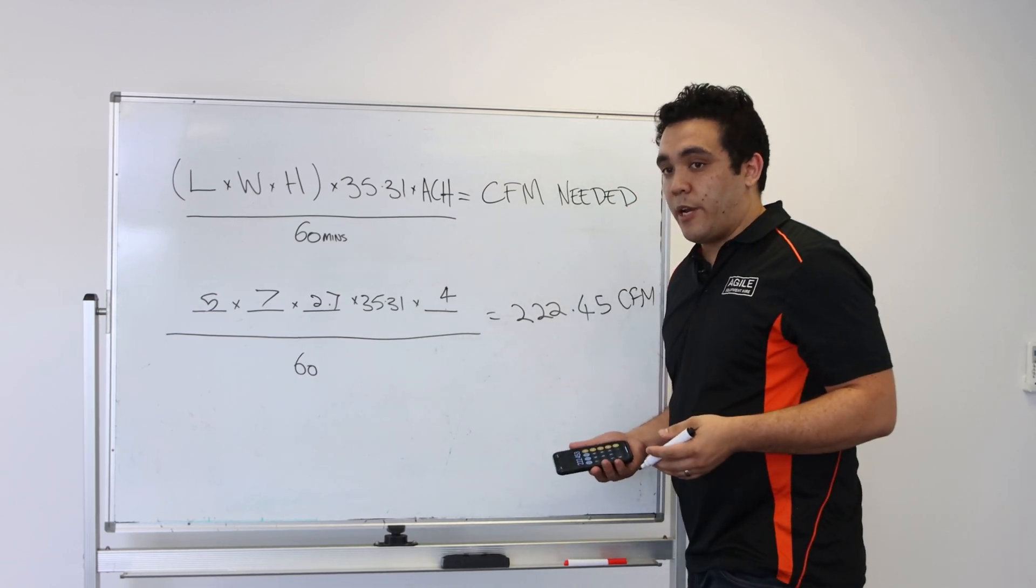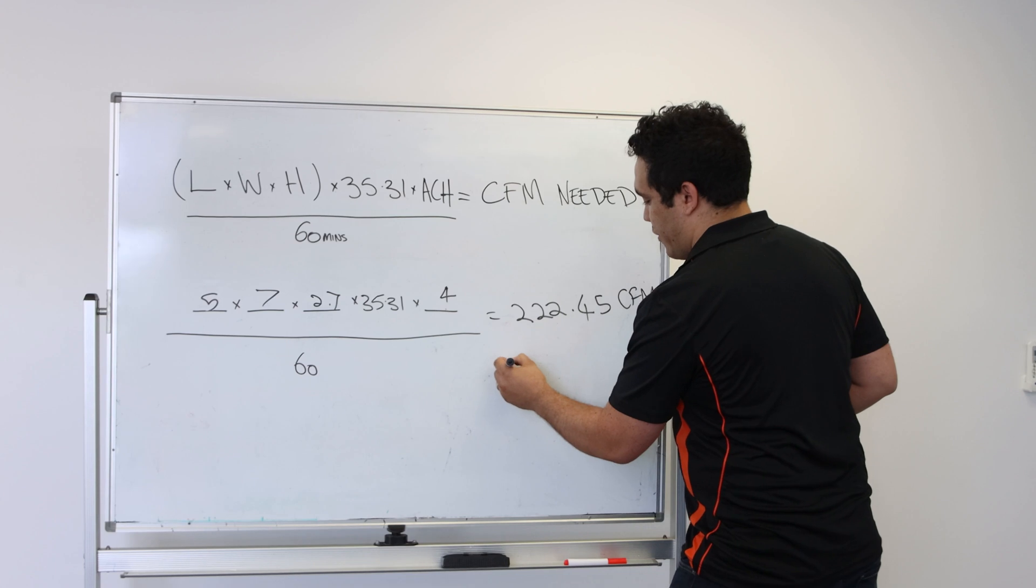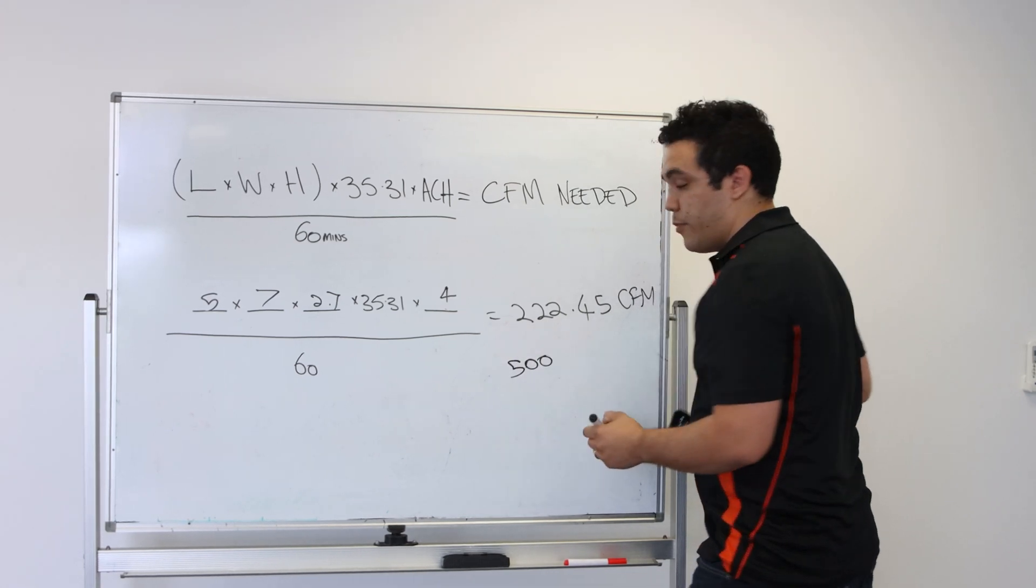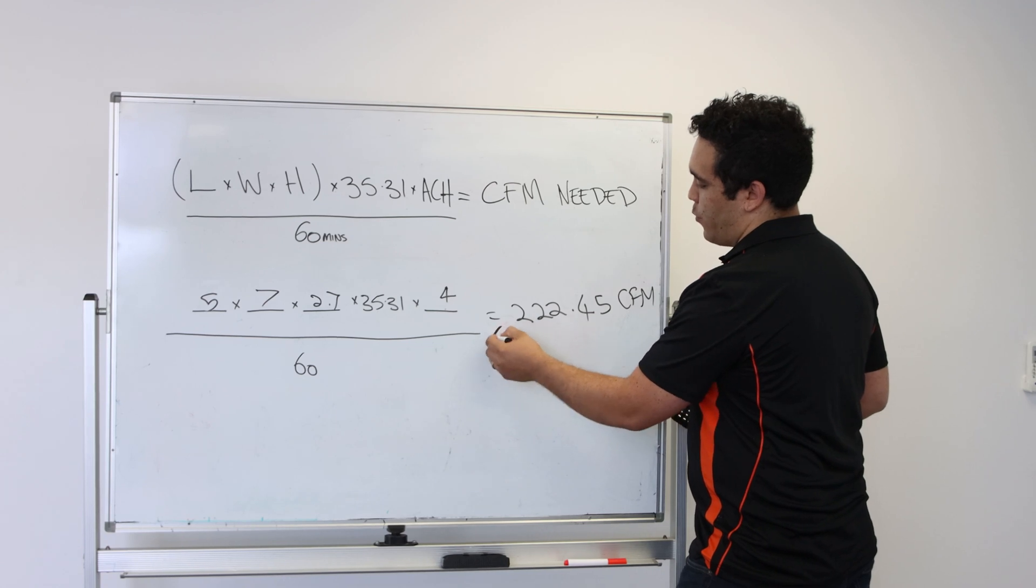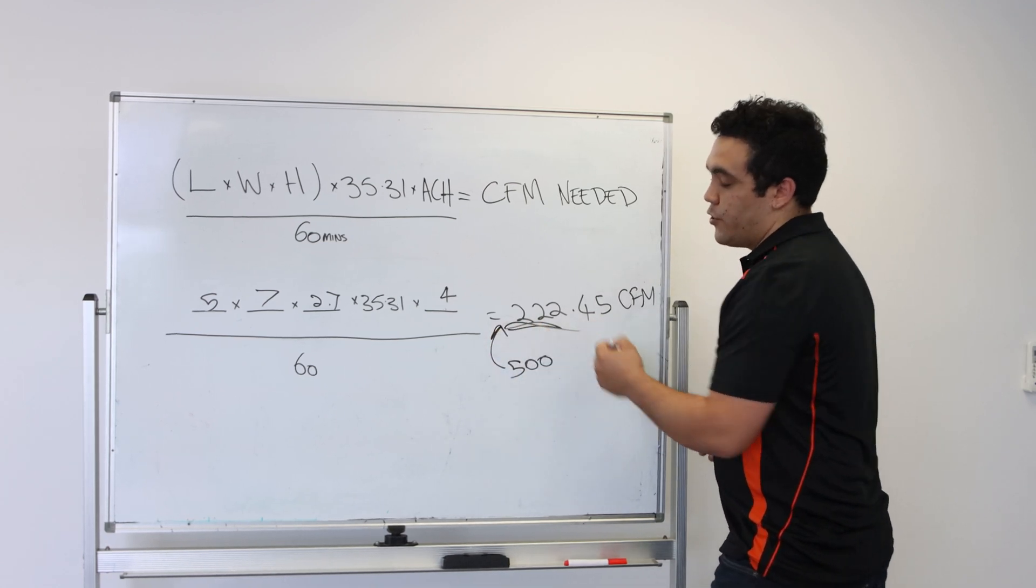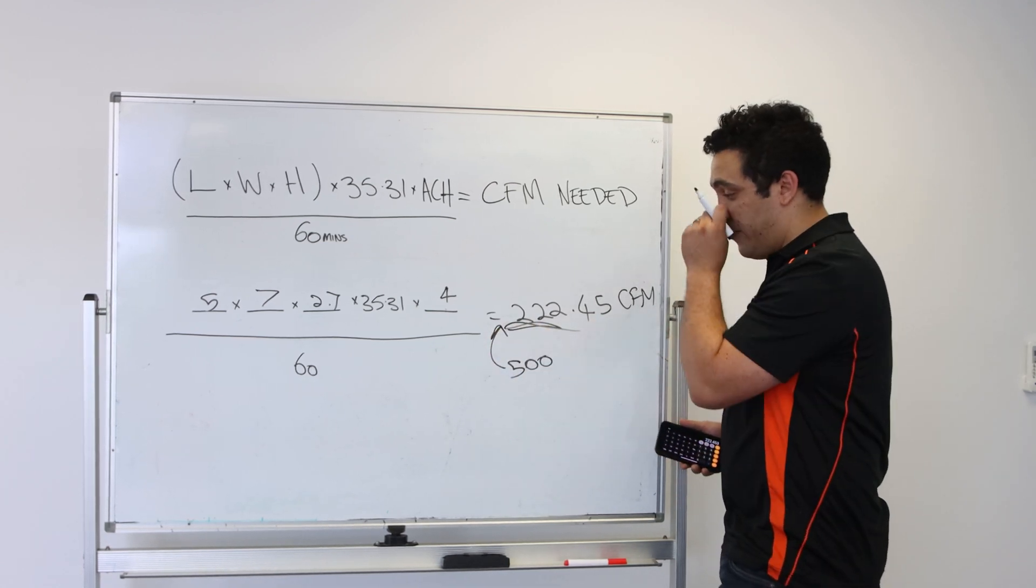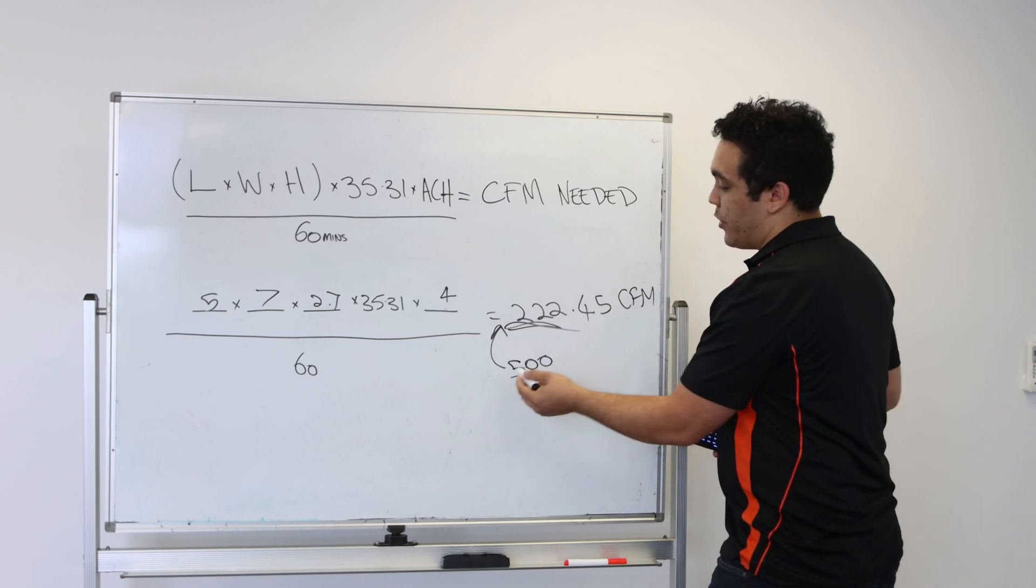If you're looking to use, say, one of our standard units, the 500 CFM HEPA unit, you can see that 500 is more than enough to cover 222 CFM. So you would only need one unit.